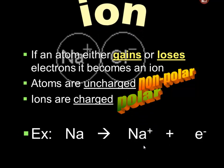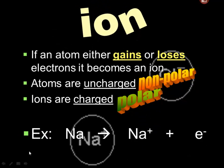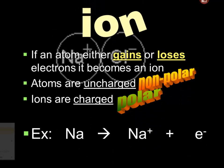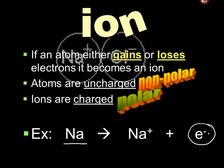Here is a sodium atom. If you remove an electron, which is negatively charged, you take something negative away from something neutral, so to balance the charges you get a positive result. This is an ion that has lost an electron.